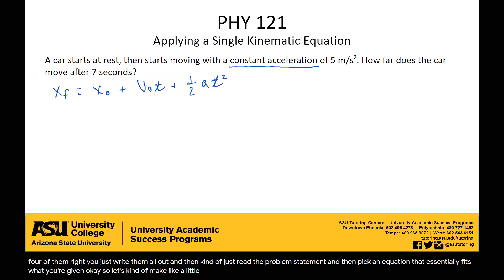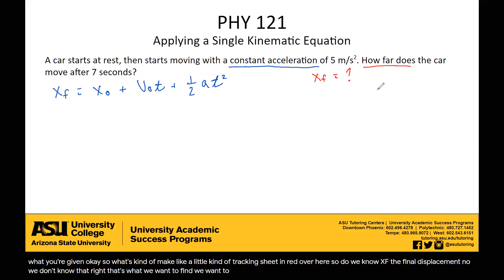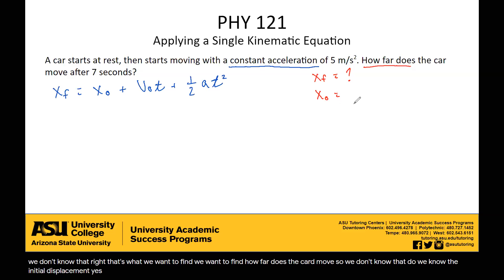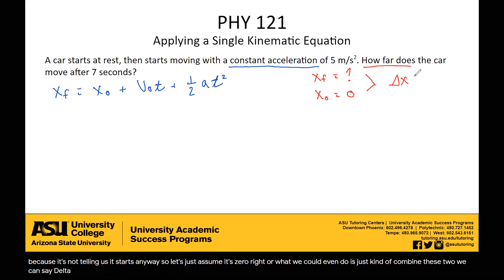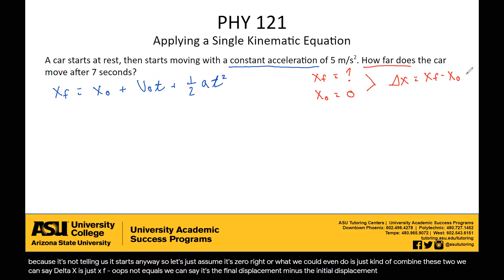Let's make a little tracking sheet. Do we know xf, the final displacement? No, we don't — that's what we want to find, how far the car moves. Do we know the initial displacement? We can assume it starts at the origin, so x-naught equals zero. Or we can combine these two and say delta x equals xf minus x-naught, which is unknown.